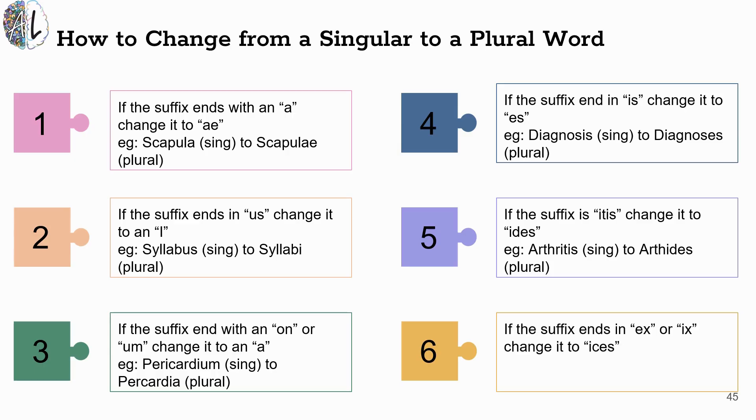If the suffix ends in an EX or an IX, we are going to change it to ICES. So you do have an appendix. An appendix is one object, but if you are referring to more than one appendix, you would refer to it as appendices with the ICES ending attached to the end.